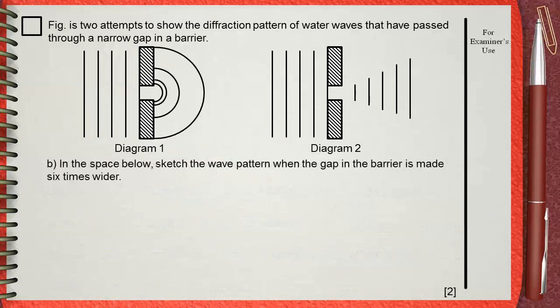Question b: In the space below, sketch the wave pattern when the gap in the barrier is made 6 times wider.